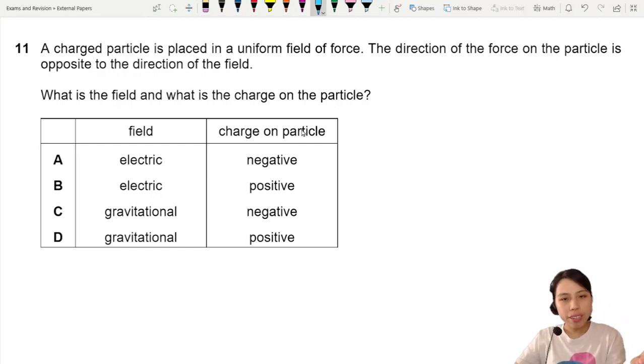A charged particle is placed in a uniform field of force. We can assume that these are the field lines pointing downwards, uniform.